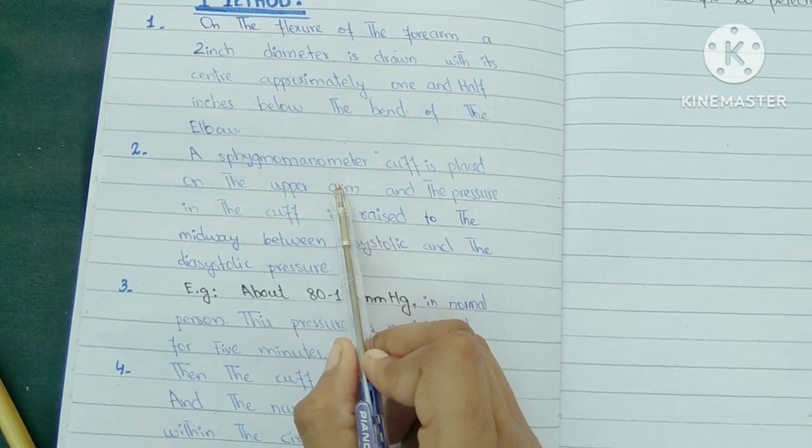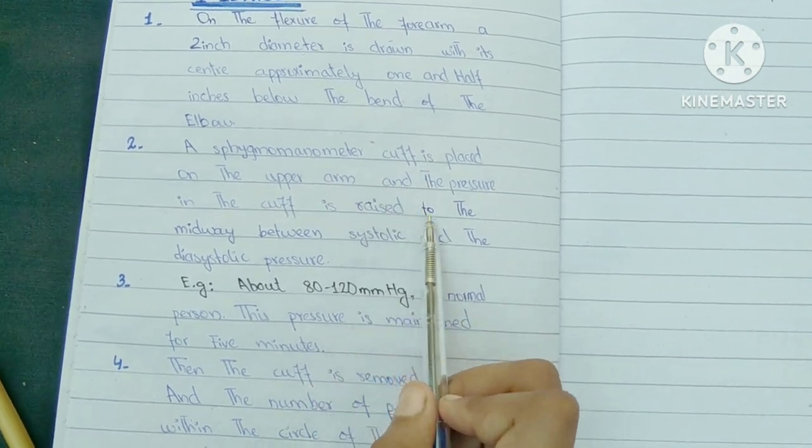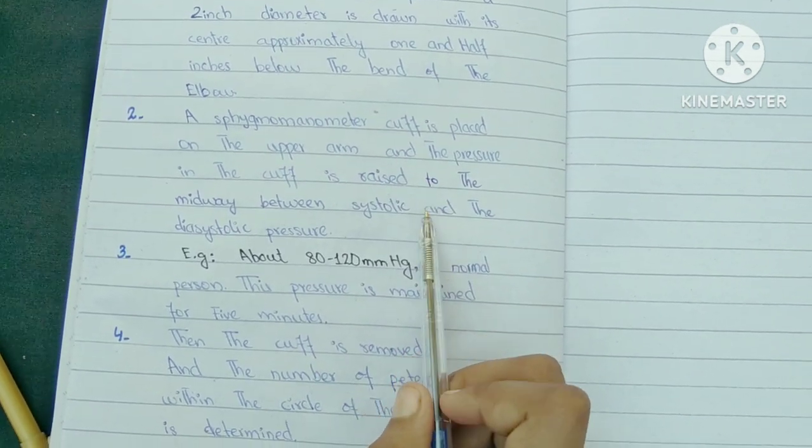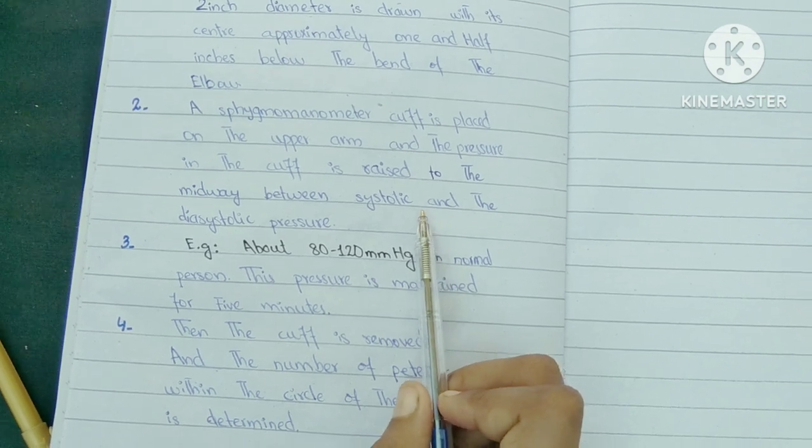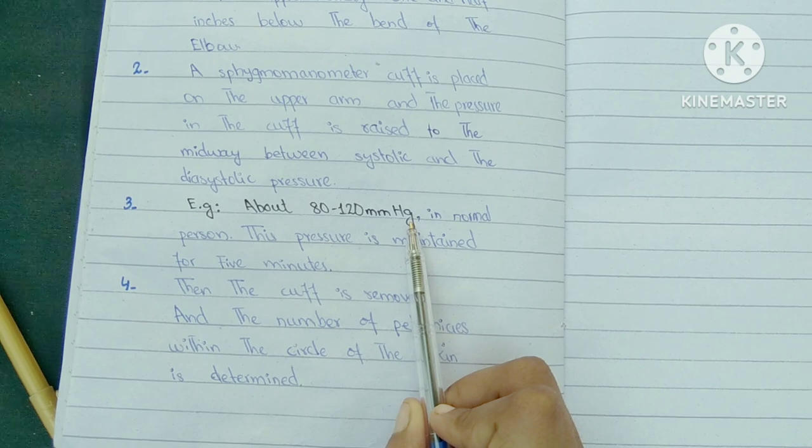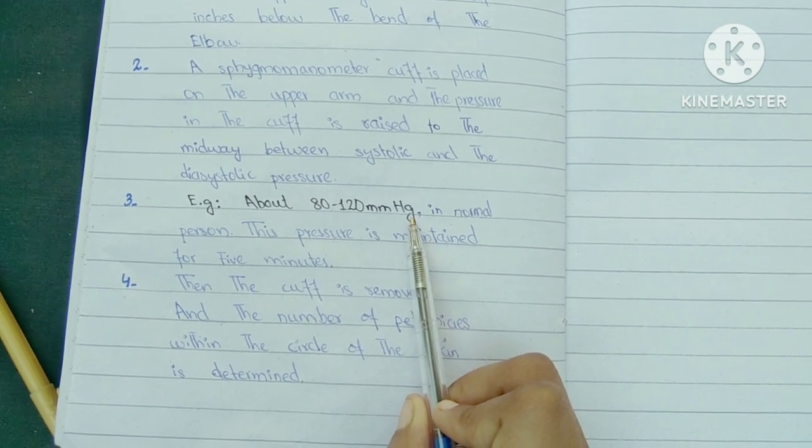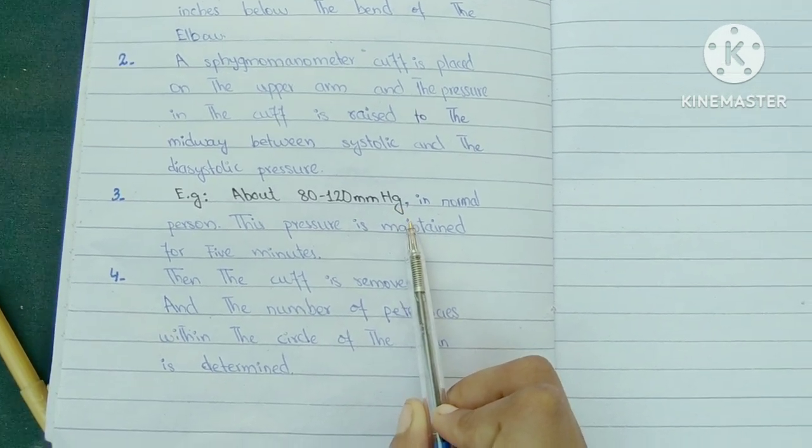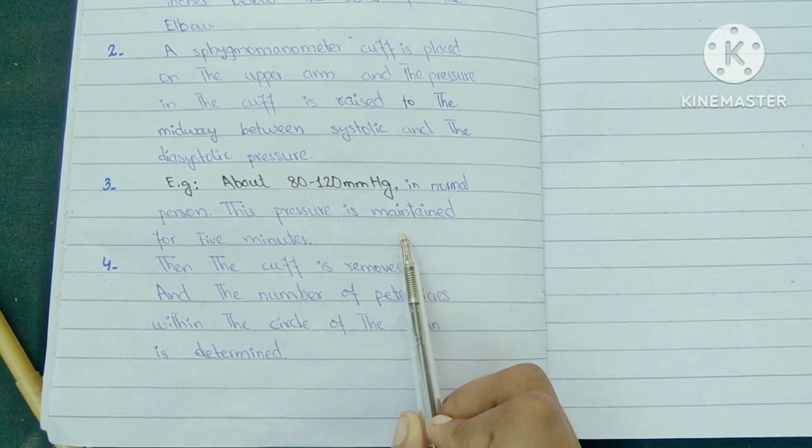Second, a sphygmomanometer cuff is placed on the upper arm and the pressure in the cuff is raised to midway between systolic and diastolic pressure. Third, for example, about 80 to 120 mmHg in the normal person, this pressure is maintained for five minutes.